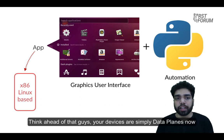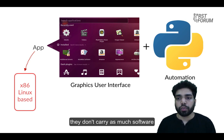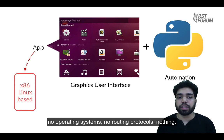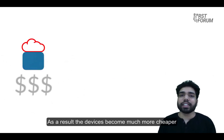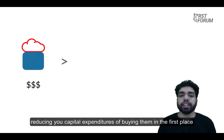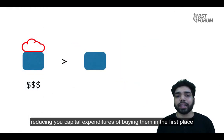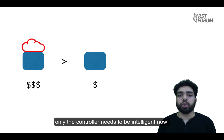Think ahead of that — your devices are simply data planes now. They don't carry as much software, no operating systems, no routing protocols, nothing. As a result, the devices became much cheaper, reducing your capital expenditure of buying them in the first place. Only the controller needs to be intelligent now.